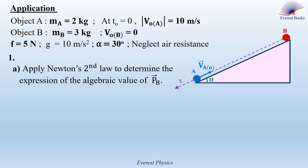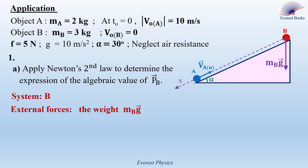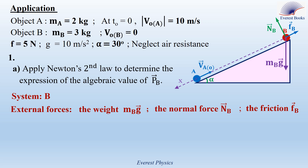Apply Newton's second law to determine the expression of the algebraic value of Pb. Pb vector is the linear momentum of object B. So the system under study is B. The external forces acting on B are its weight MbG, the normal force exerted by the incline, and the friction force.